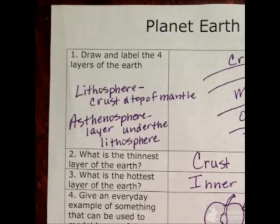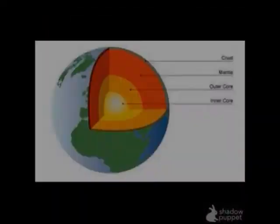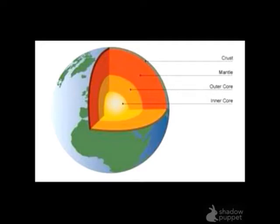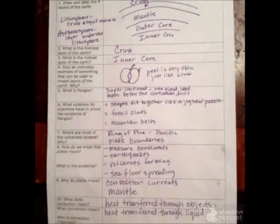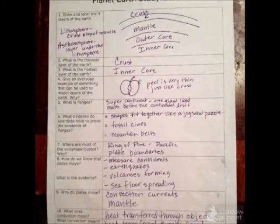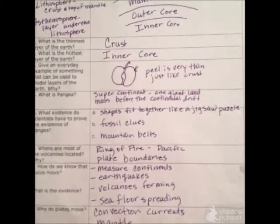You should also know that the lithosphere is composed of the crust and the very top of the mantle. The asthenosphere — remember, that's the gooey layer right underneath the lithosphere. Here's a picture of the different layers, the four main layers.